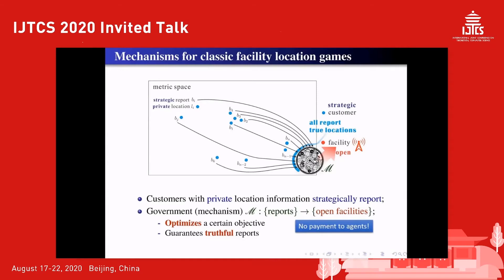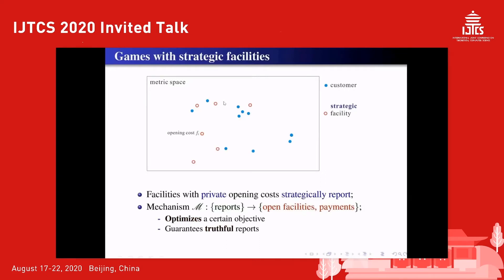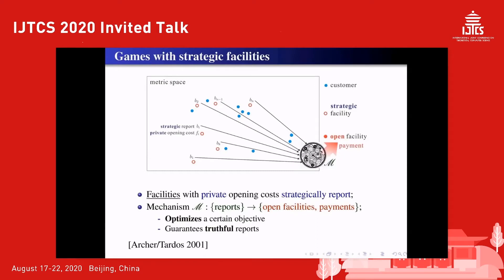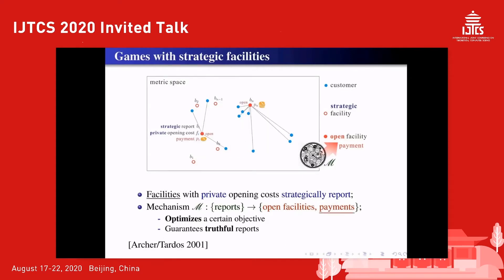The classical model does not involve payment to agents. In most studies of facility location games without payment, the government can build facilities anywhere in the space, and only the customers are strategic agents. However, in reality, the locations of potential facilities are usually limited and given in advance. Each potential facility might have an opening cost. Harcher and Tardos consider this scenario and study a facility location game where only facilities are selfish agents and strategically report their opening costs to maximize their own utility, while the locations of non-strategic customers are public information. To the best of our knowledge, this is the first work on facility location games that considers payments to agents.